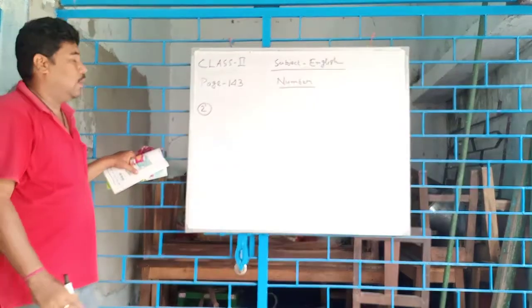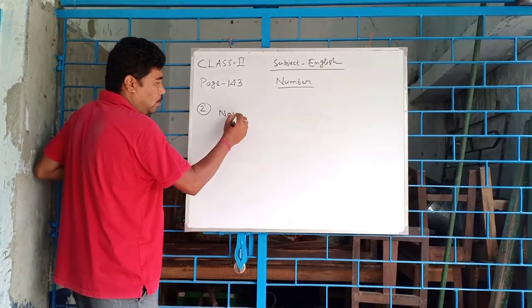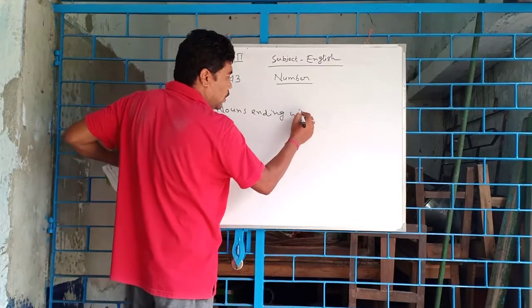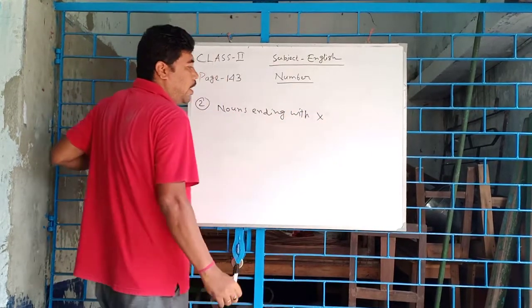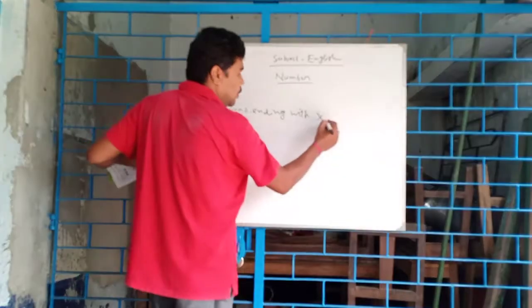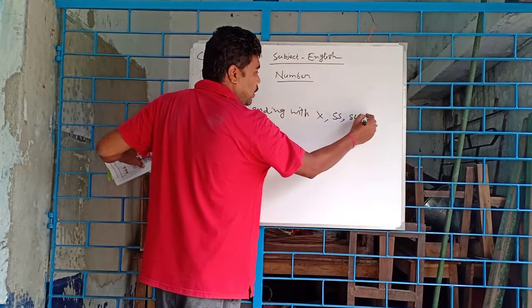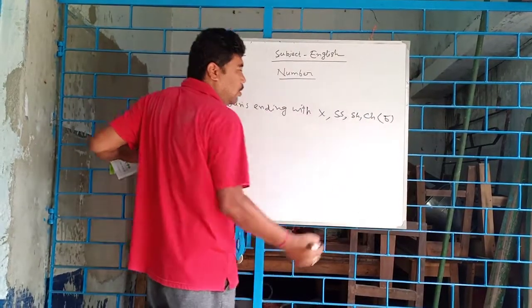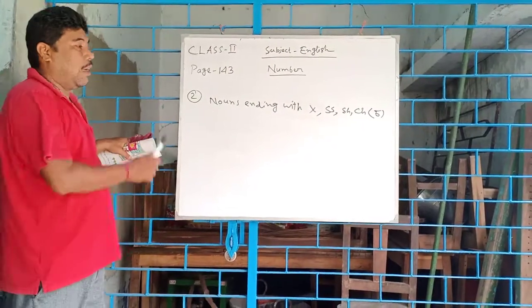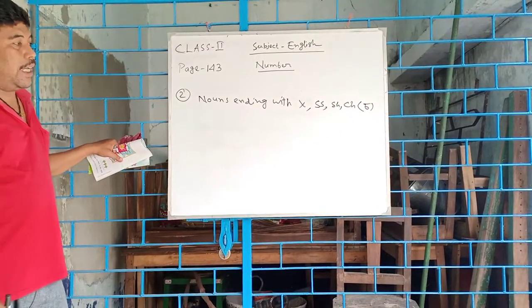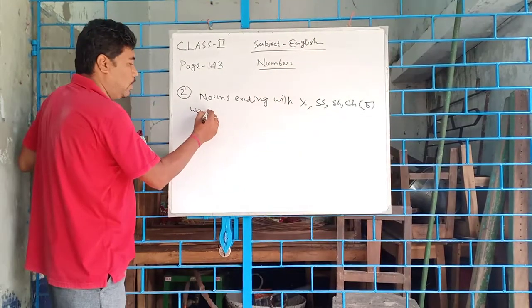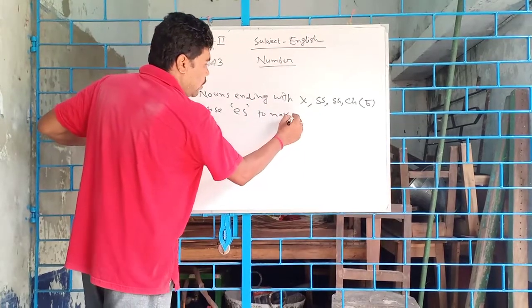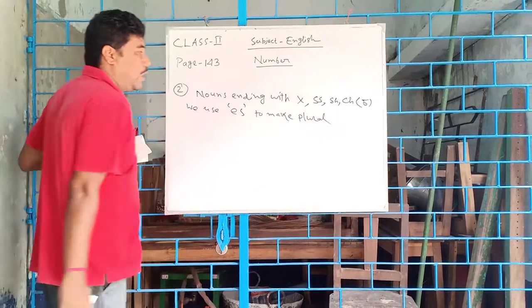Number two, the special rule: nouns ending with X, SS, SH, CH. If the nouns ending with X, SS, SH, CH, we use ES to make plural.